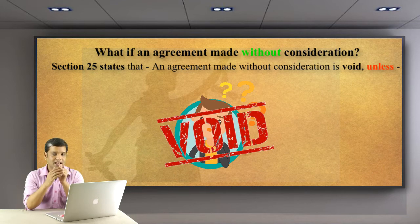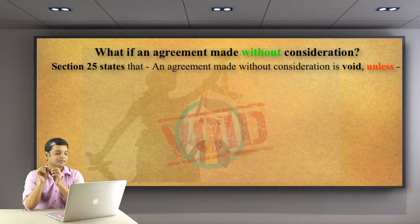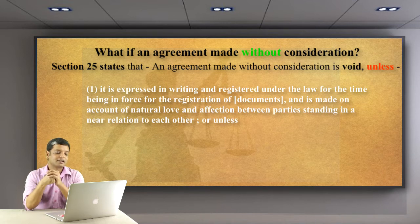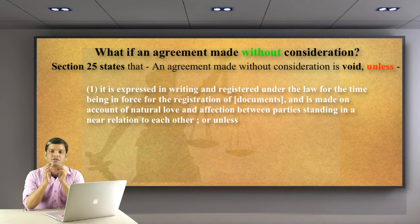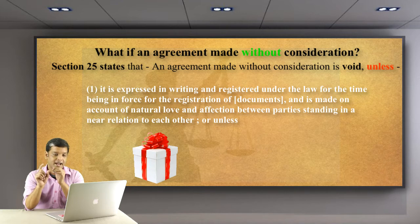Unless — unless it is expressed in writing and registered under the law for the time being in force for the registration of documents, and is made on account of natural love and affection between parties standing in a near relation to each other. If you correlate this provision with one of the modes of transfer of property we've already studied, that is gift — gift is also a contract as per this provision.